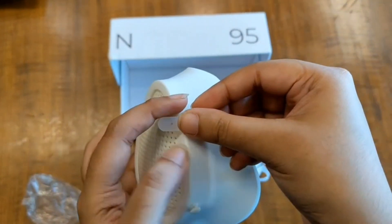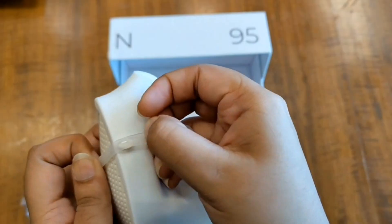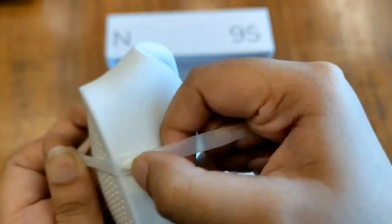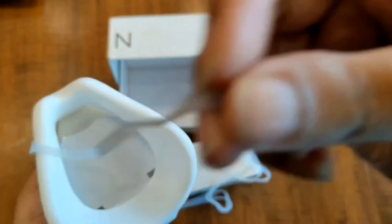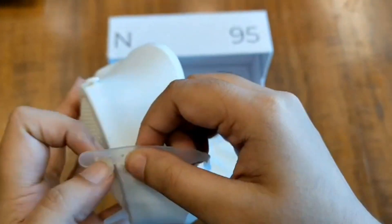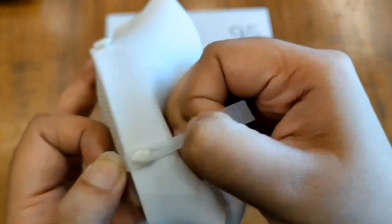On the sides of the mask, there are two attachment points. Hook the hole to the attachment points, one on each side. Do the same thing with the second strap as well.